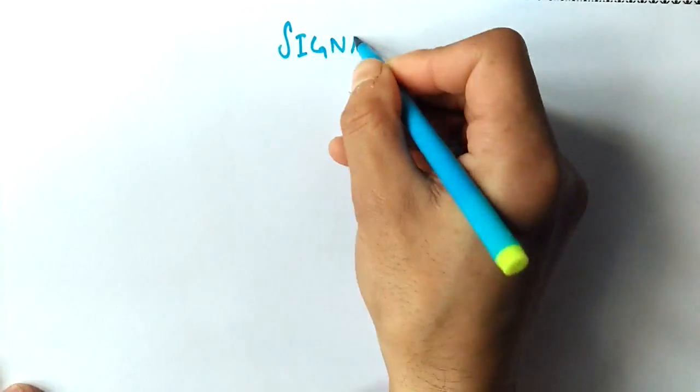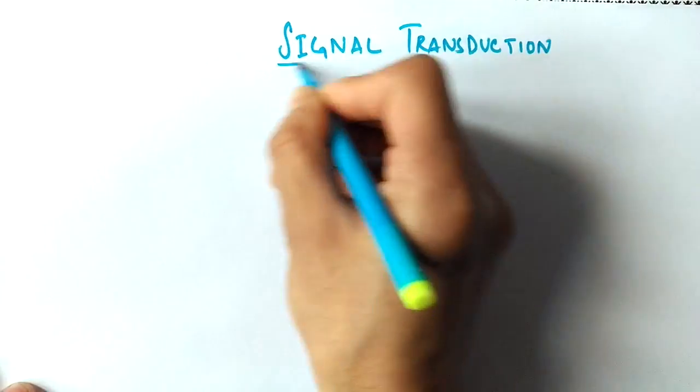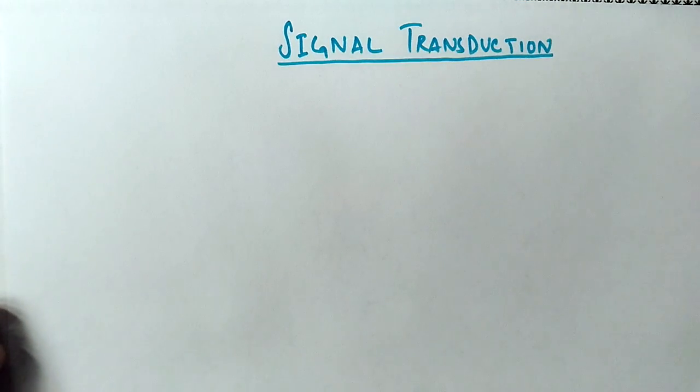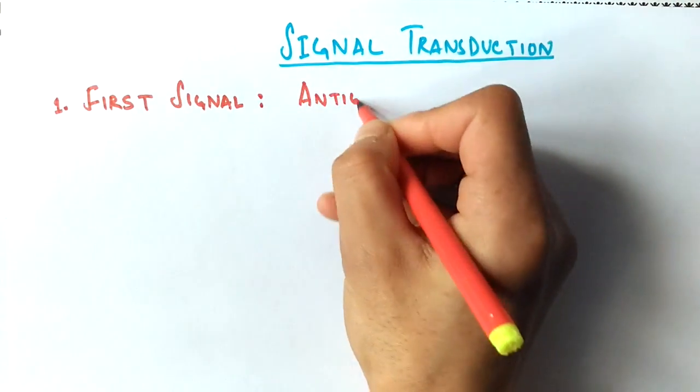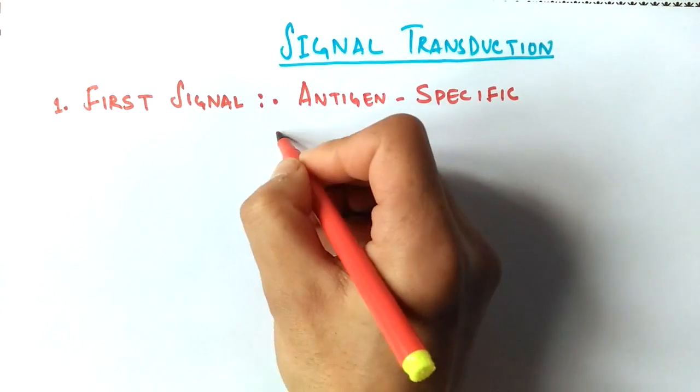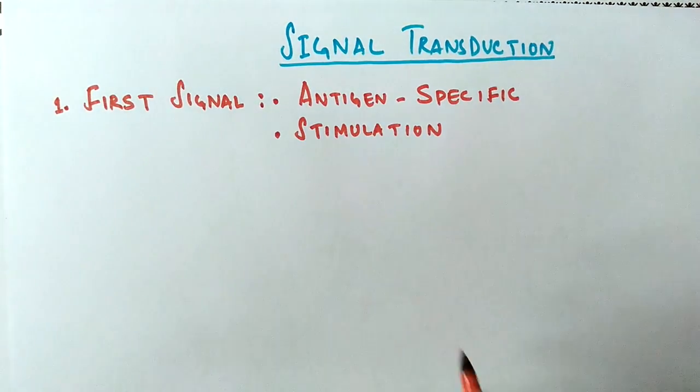Now we will see the signals involved in T cell activation. We have three different types of signals here and we will be discussing them one by one. The first signal is antigen specific and it's also called stimulation. This signal is transduced between MHC molecule and TCR, the T cell receptor.